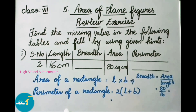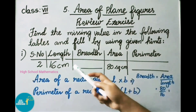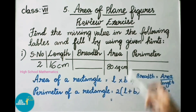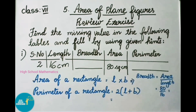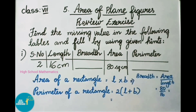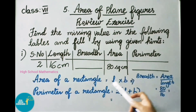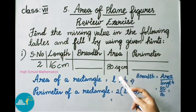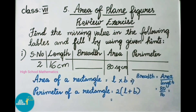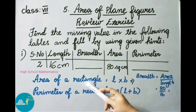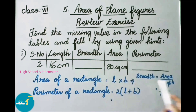For the second one, they have given length 16 centimeters and area 80 square centimeters. We have to find breadth and perimeter of the rectangle. Using the area formula (length × breadth), since we have area and length, we can find breadth: breadth = area ÷ length.